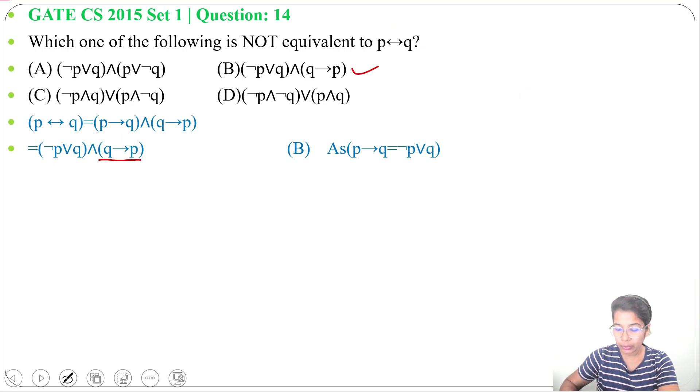Again, I'll write Q implies P in OR format. So I'll write negation Q or P. The same is present in option A.